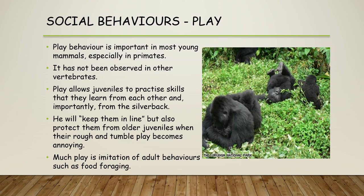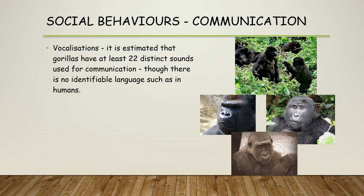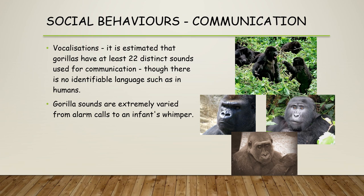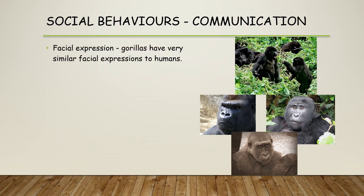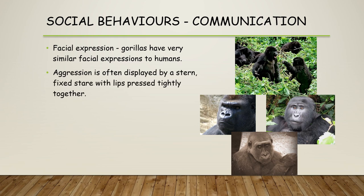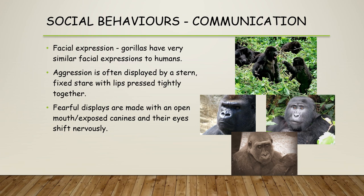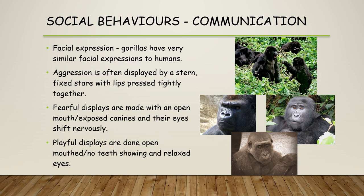Play also imitates adult behaviour such as food foraging, so juveniles are learning skills as they play and develop. Communication can be done through vocalisation — it's estimated there are around 22 distinct sounds used to communicate within gorillas. There's no identifiable language as in humans, but clear messages have been identified within those grunts and vocalisations, ranging from alarm calls to infant whimpers. Gorillas also frequently grunt towards the end of their midday nap sessions, thought to signal the rest period is about to end.